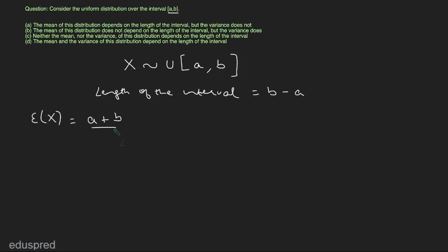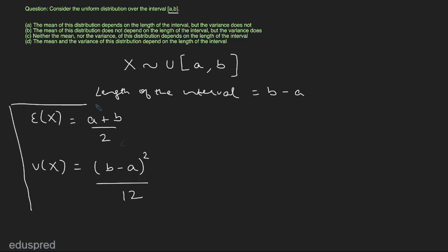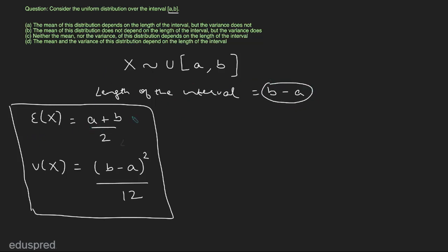If a random variable has a uniform distribution over the interval a comma b, then its mean is equal to a plus b divided by 2, and its variance is equal to b minus a squared divided by 12. The length of the interval is b minus a. The mean does not depend on b minus a, but the variance does. So the right answer is part B, which says the mean does not depend on the length of the interval but the variance does.